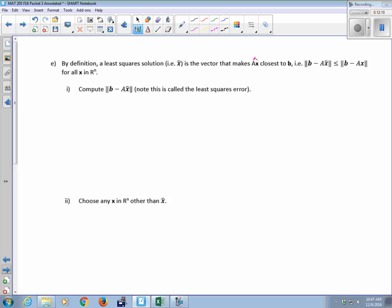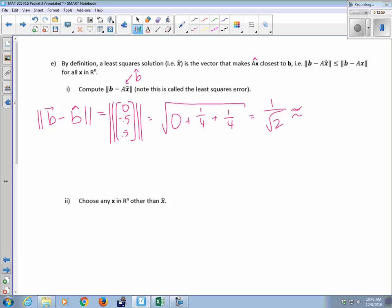Okay. So I'm going to compute B minus AX hat. This is called the least squares error. X hat is called the solution. And then AX hat is really B hat. All right. It's just another way of calculating B hat. So I want to do B minus B hat. And this is how far off I am. So the length of B minus B hat. That is going to be the length of Z. Which is zero, negative a half, a half. Which is the square root of zero plus a fourth plus a fourth. Which is one over square root of two. Which is approximately 0.707.